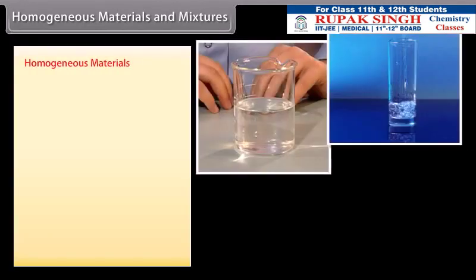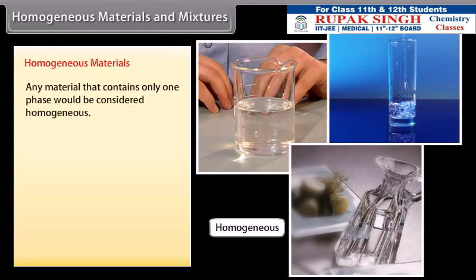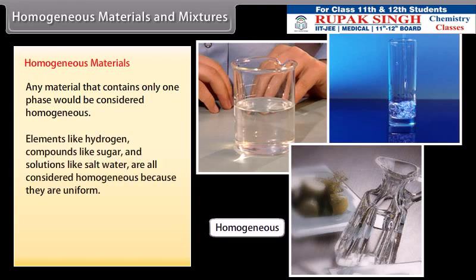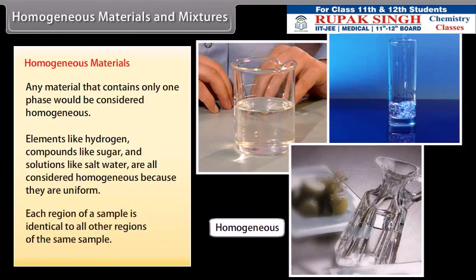Any material that contains only one phase would be considered homogeneous. Elements like hydrogen, compounds like sugar, and solutions like salt water are all considered homogeneous because they are uniform. Each region of a sample is identical to all other regions of the same sample.